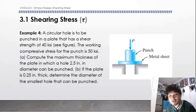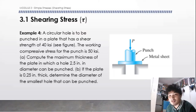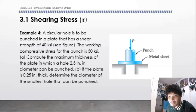Hi guys, welcome to the third part of our topic on shear stresses. Let's consider the following example: A circular hole is to be punched in a plate that has a shear strength of 40 KSI. The working compressive stress for the punch is 50 KSI. Compute the maximum thickness of the plate in which a hole 2.5 inch in diameter can be punched. And then, if the plate is 0.25 inch thick, determine the diameter of the smallest hole that can be punched.